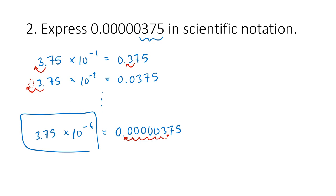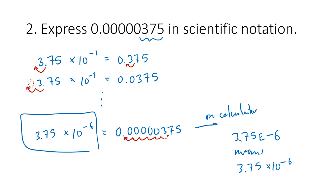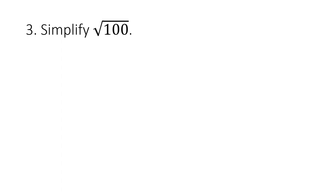A note about calculators: when you use a TI calculator to express very large or small numbers, the notation involves the letter E. So this number would show up as 3.75E-6, meaning 3.75 times 10 to the negative 6. That capital E means "times 10 to the." Don't confuse it with the special number e used for natural logarithms — the 2.718 number — it's not the same E at all.